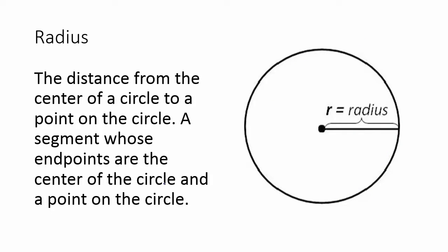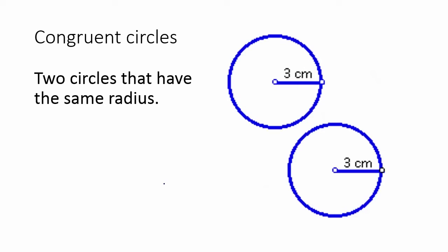Radius: the distance from the center of a circle to a point on a circle. A segment whose endpoints are the center of the circle and a point on the circle. Congruent circles: two circles that have the same radius.